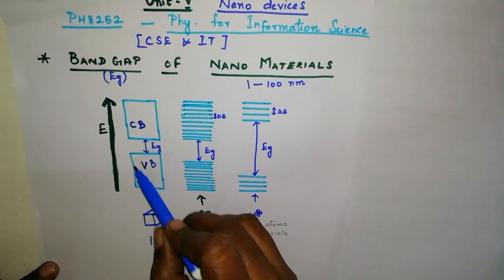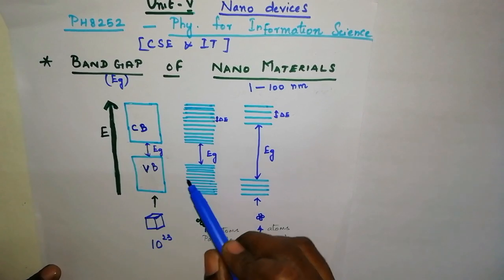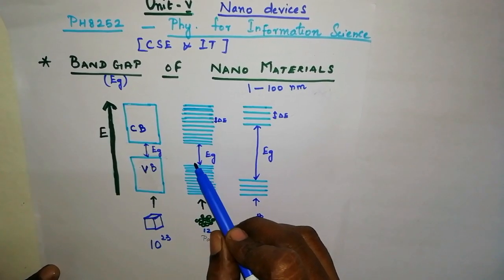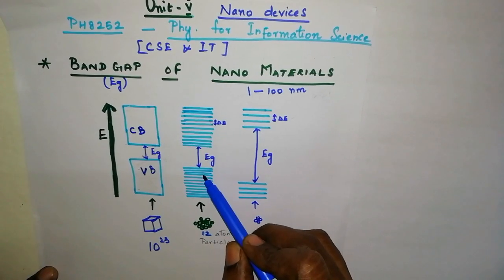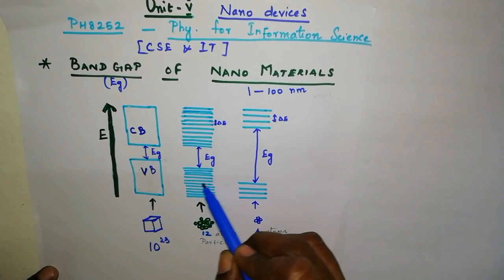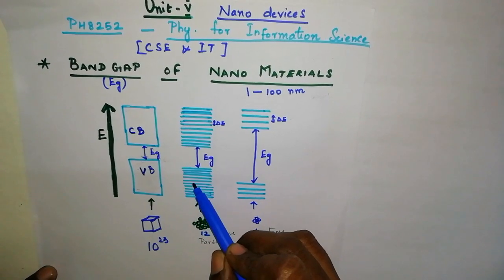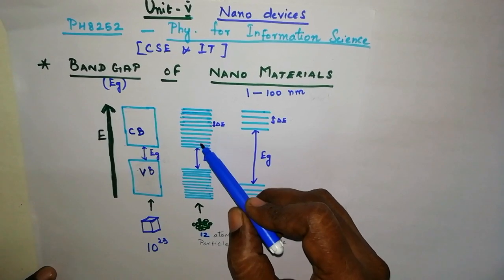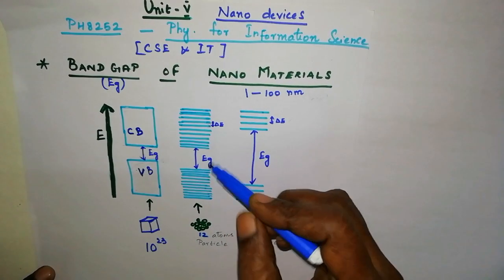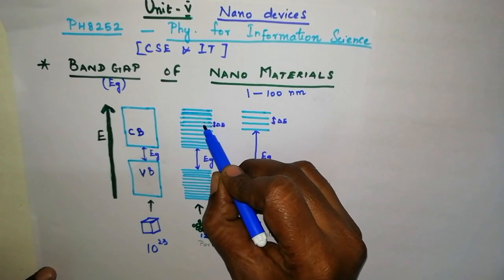What will happen when the size of the bulk material is reduced? During the reduction process, based on the number of atoms present in the given volume, the number of overlapping of energy levels decreases. This will cause an increase in the energy gap between conduction band and the valence band. Here, del-e denotes the spacing between the subshells.